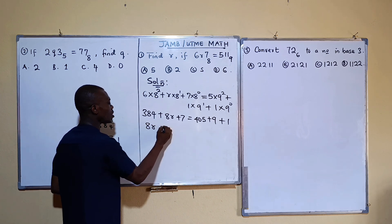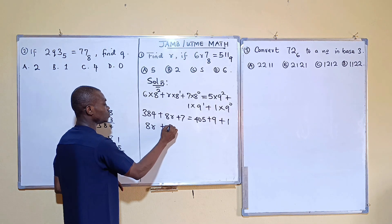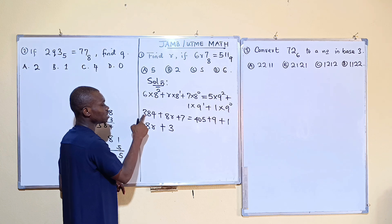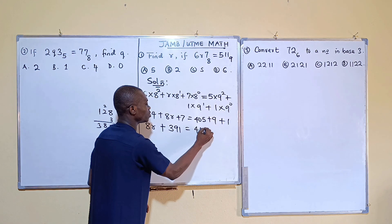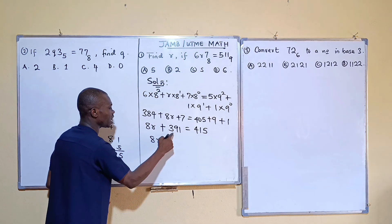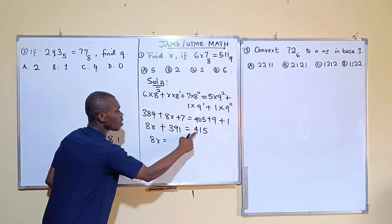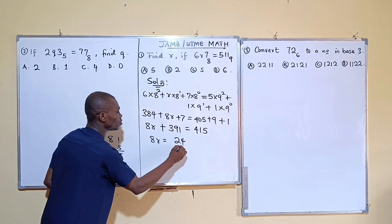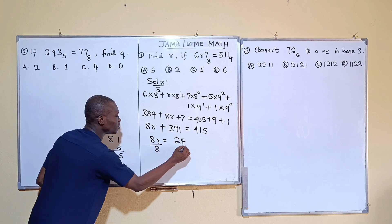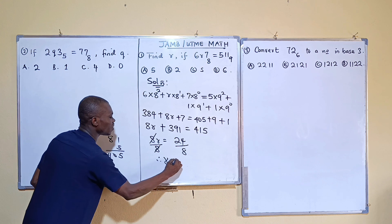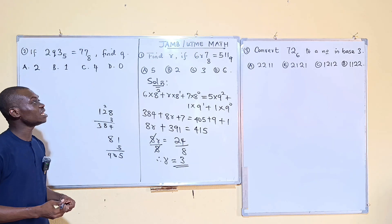Combining the left side: 384 plus 7 is 391. So we have 8r plus 391 equals 415. Moving 391 to the other side: 8r equals 415 minus 391, which gives us 24. Dividing both sides by 8, r equals 24 over 8, which equals 3. So the correct answer is option C.